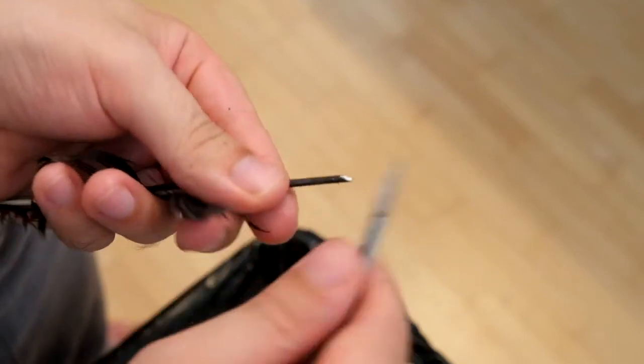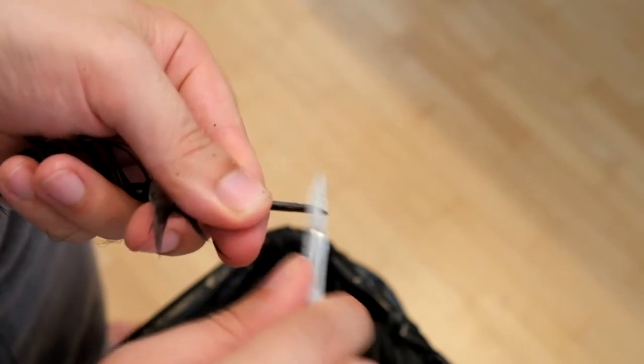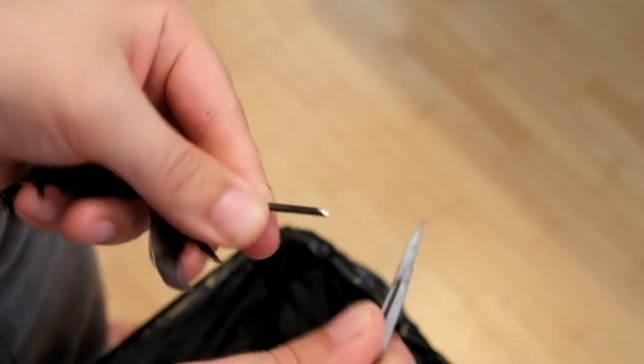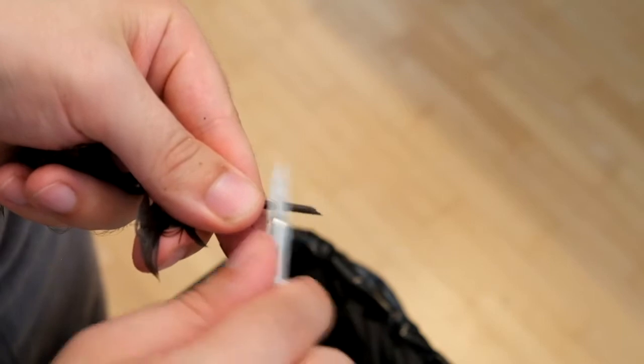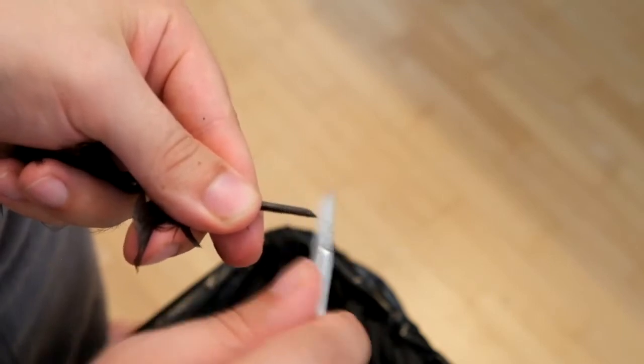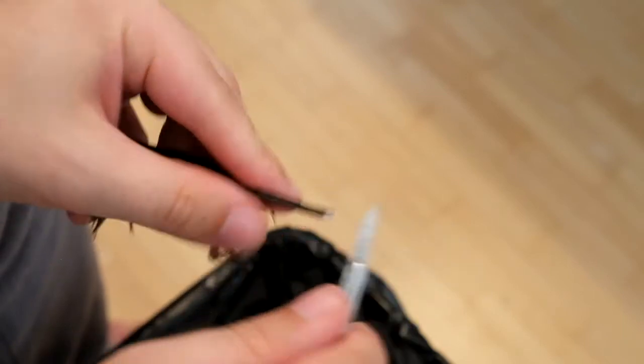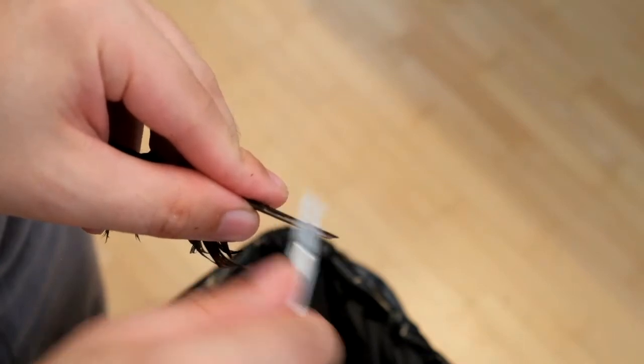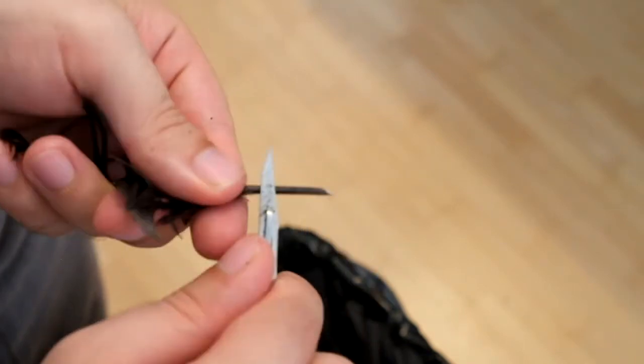It is also possible to simply rip off the barbs; they will come off in one long strip. However, I found this to be rather risky, and sometimes I'd end up pulling material from the vein as well, rendering parts or sometimes even the whole feather useless.